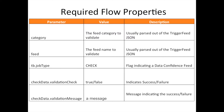There are some key parameters that are required when setting up a data confidence flow. You need to pass in the following: a category, which indicates the category of the feed you are validating; feed, which indicates the feed name you are validating; a tb.job type, which indicates the data confidence or check data job as the value of check; a check data dot validation check, which is a boolean resulting to true or false indicating success or failure; and an optional check data dot validation message indicating what happened whether it was success or failure.